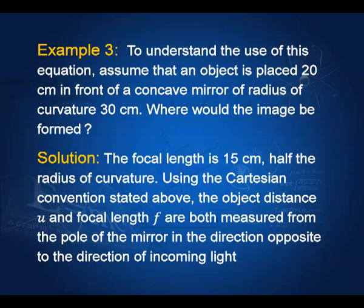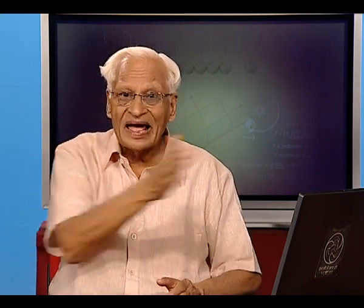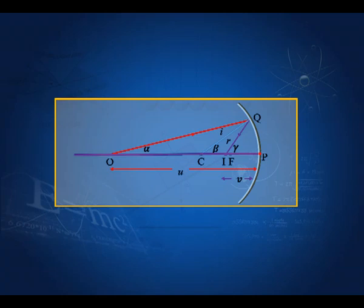So, v is unknown, u is minus 20 centimeters, and f is minus 15 centimeters. Substituting into 1/v + 1/u = 1/f, we get 1/v = 1/f − 1/u, which gives v equal to minus 60 centimeters. Since v is negative, the image is to the right of the mirror — that is, behind the mirror.